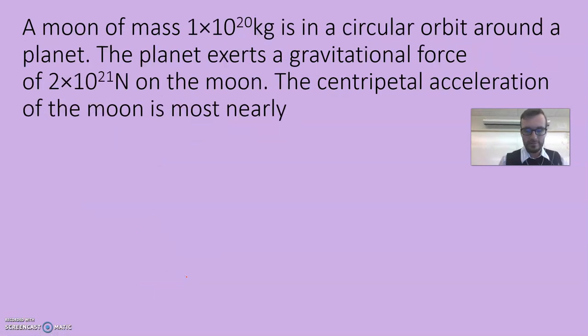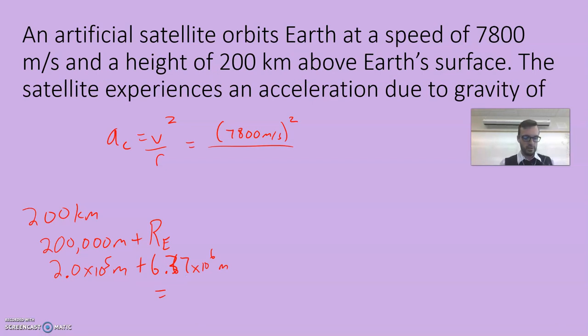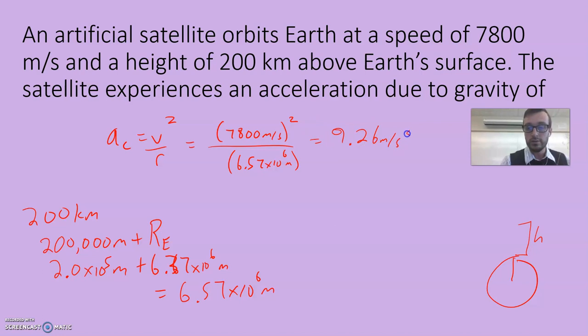I found the radius of the Earth, and the radius of the Earth is 6.37 times 10⁶ meters, and then I'm going to add our 200,000 meters. 2.0 e5 plus 6.37 e6 is going to be 6.57 times 10⁶ meters. So we've got 7,800² divided by 6.57 e6. We're getting 9.26. Why is that good news? Because on the surface of the Earth, we know our gravitational acceleration is 9.8. We get a slightly lower number because we're getting further away from the planet.